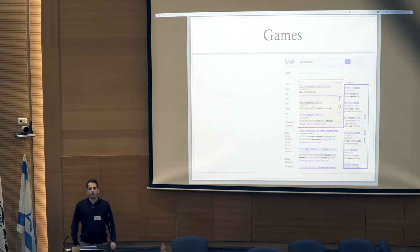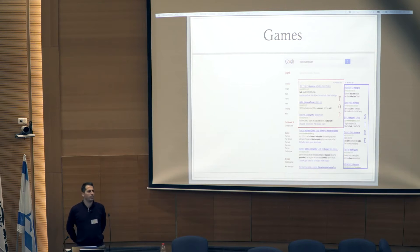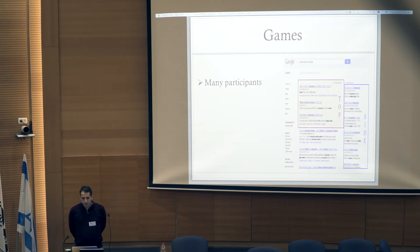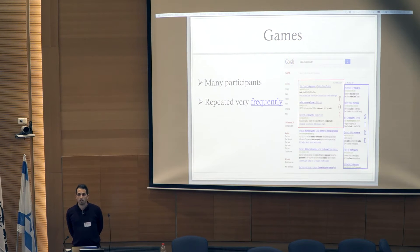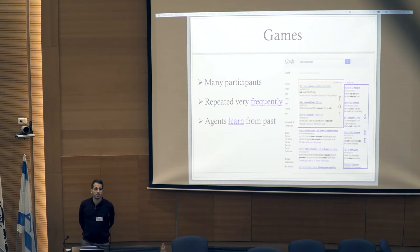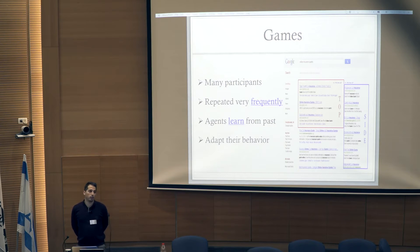One example is that of advertising auctions. If we look at this example, there are some interesting features. First, there are many players taking part in these games. Second, these games are repeated very frequently over time — there are many auctions happening every second for each keyword. So agents can observe what happened in the past and learn from this past experience in order to make more sophisticated decisions in the future.